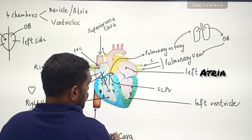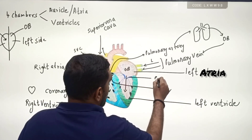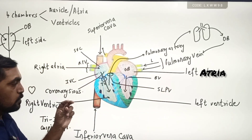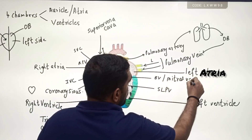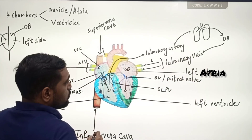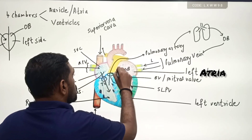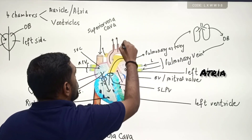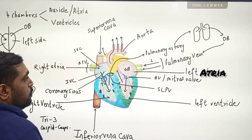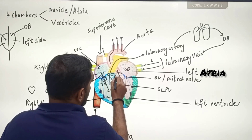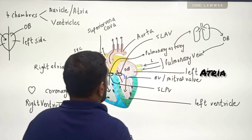The oxygenated blood from the left atria enters into the left ventricle, guarded by a valve called the bicuspid valve — bi means two, cusp means muscles. The bicuspid valve is also called the mitral valve. The oxygenated blood from the left atria enters the left ventricle through this bicuspid valve, and from there the oxygenated blood gets pumped to all parts of the body through the aorta. The aorta is also guarded by a valve called the semilunar aortic valve.